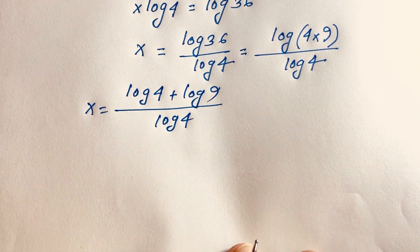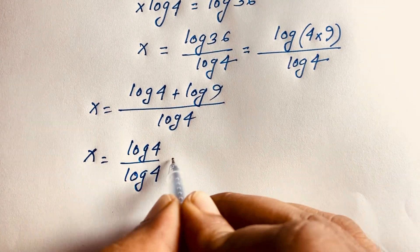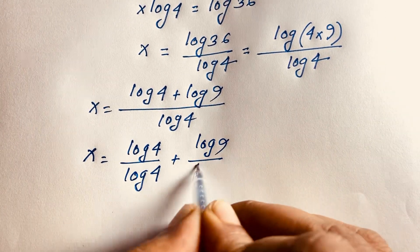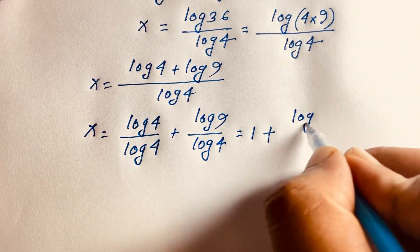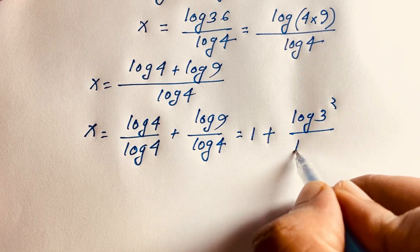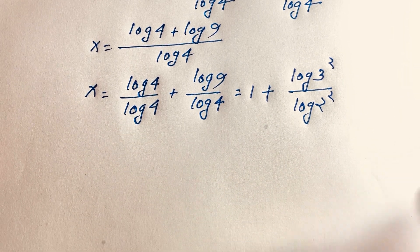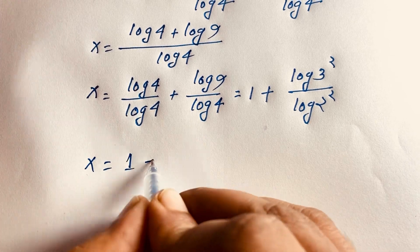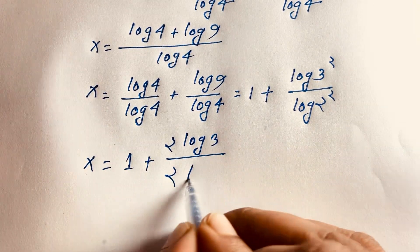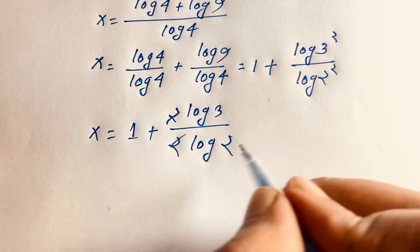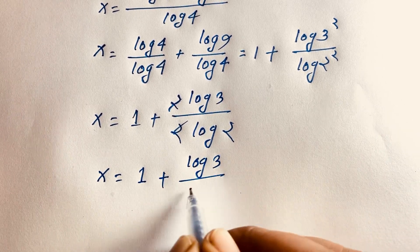Now, x is equal to log 4 divided by log 4, plus log 9 divided by log 4. If I cancel out log 4 over log 4, we will find 1 plus log 9 over log 4. And since 9 is 3 squared and 4 is 2 squared, this becomes 1 plus log of 3 squared over log of 2 squared.